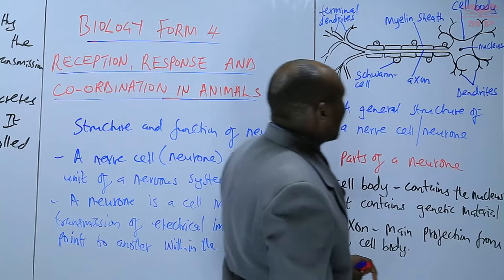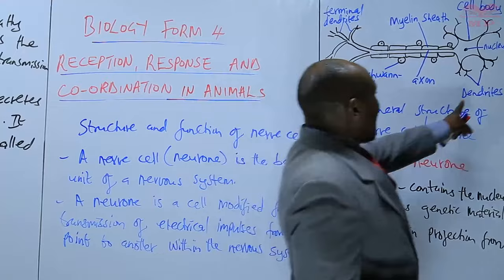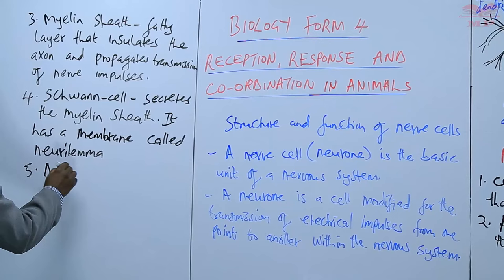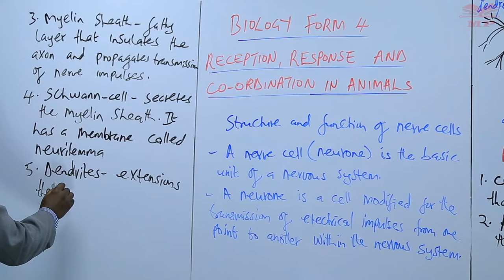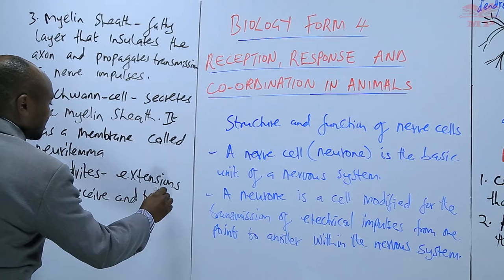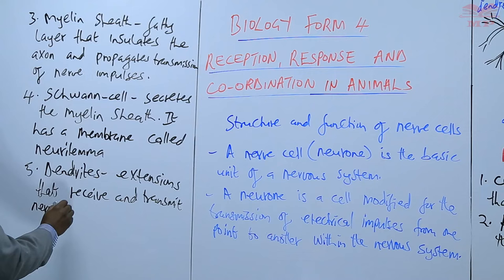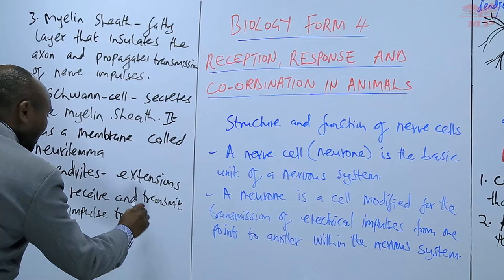The other part to mention are the dendrites. These are extensions that receive and transmit nerve impulses to other nerve cells — to the adjacent nerve cells.